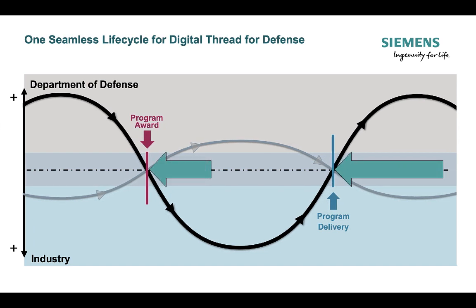That allows us to take this process and shrink it. The program award happens faster and the program delivery happens faster. We've had planes with this system be built and delivered in 18 months. And it's an agile system, so the plane delivered in 18 months is the first iteration — it flies, but then you can start to add ordnance onto it, add other systems, and you now have something to work with and models to build upon.